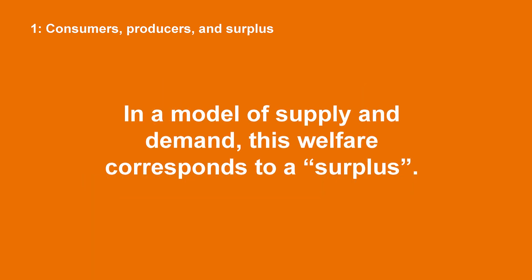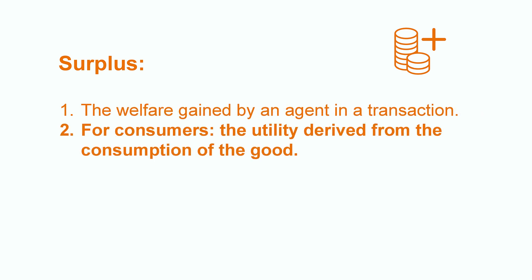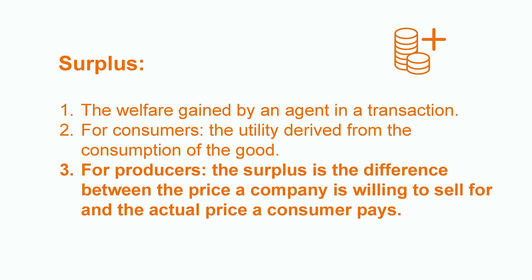In a model of supply and demand, this welfare corresponds to a surplus. A surplus is the welfare gained by an agent part in a transaction. In general, for consumers, it is the utility derived from the consumption of the good. For producers, it is the money gained through the difference between the price the company is willing to sell its products for and the actual price the consumer pays.